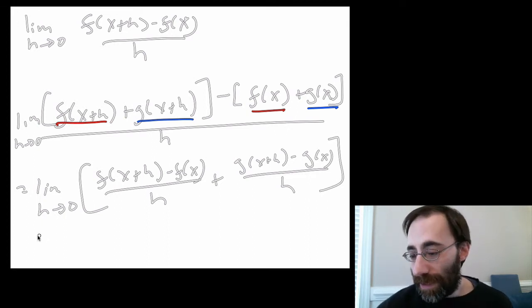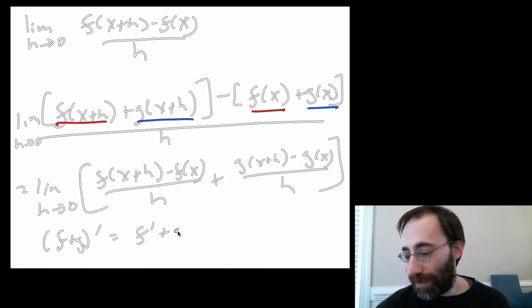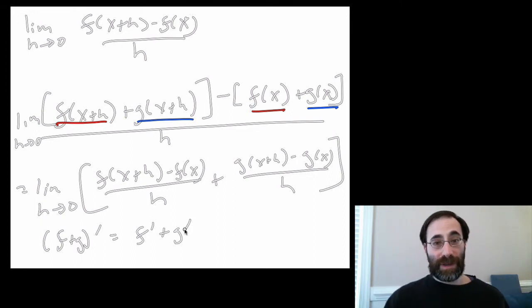What does that mean? That means the derivative of f plus g, which is that first thing that we did, is equal to the derivative of f plus the derivative of g, which is the second thing we did. There you go. That already is half of the rule. We can do the other half.